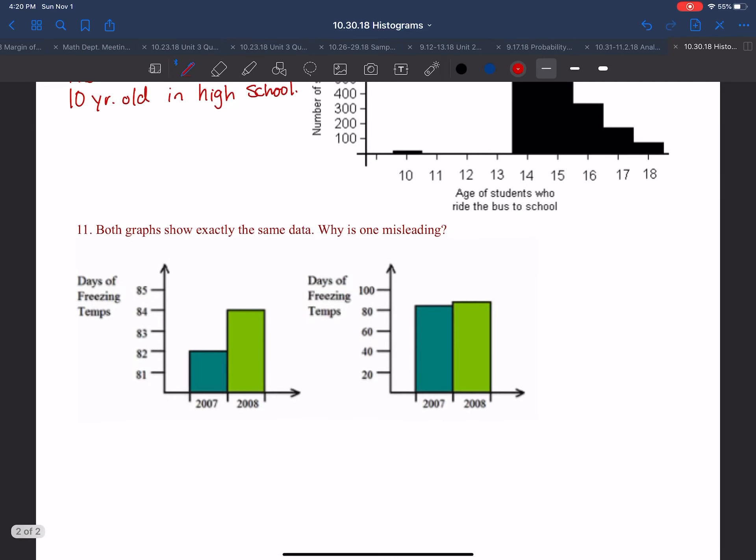And then number 11, both graphs show exactly the same data. Why is one misleading? We've got two graphs. Both are showing the same exact data. But if you look, the only difference between them is the y-axis. The y-axis is showing the days of freezing temps. One of them starts at 81 and goes to 85. The other one starts at 20 and goes to 100. And because of that, the data appears different. 2007 had 82 days. 2008 had 84 days. The one on the right shows the same exact data.